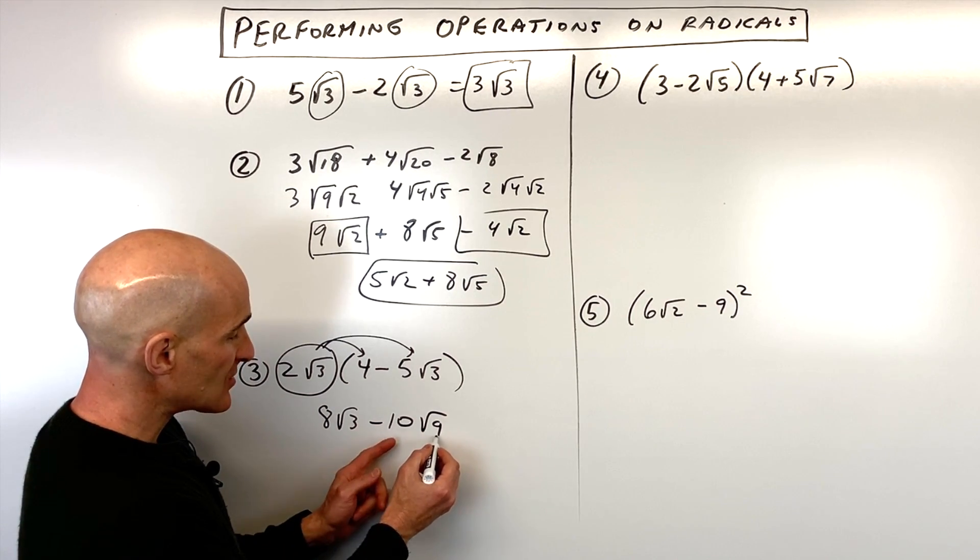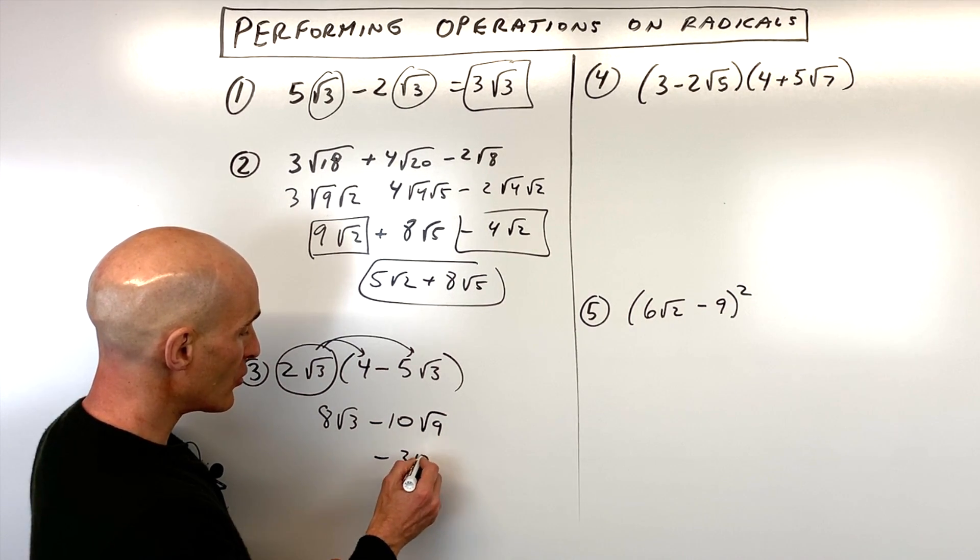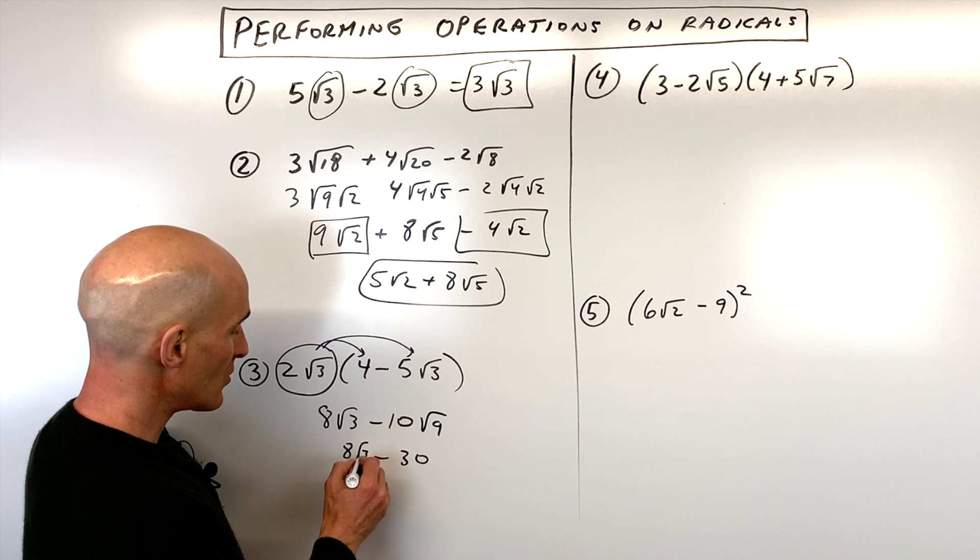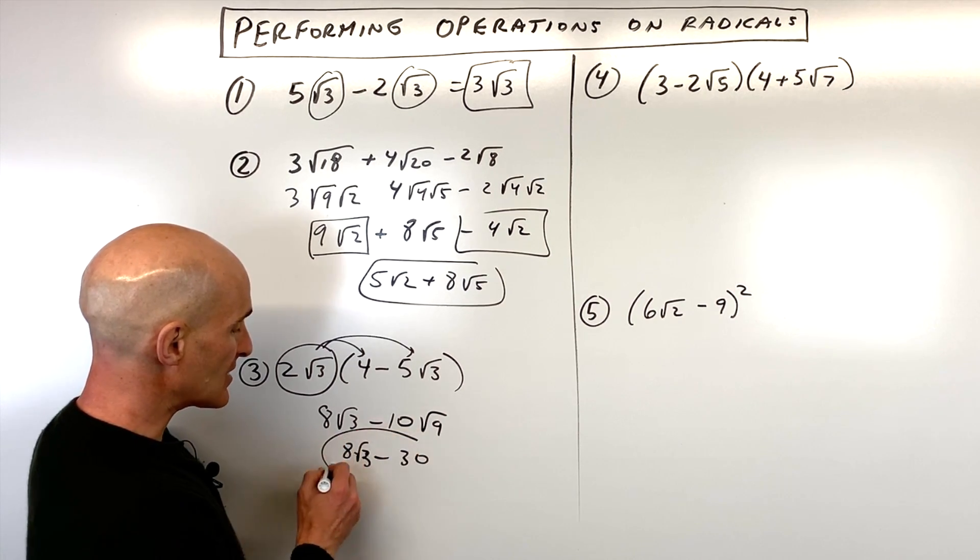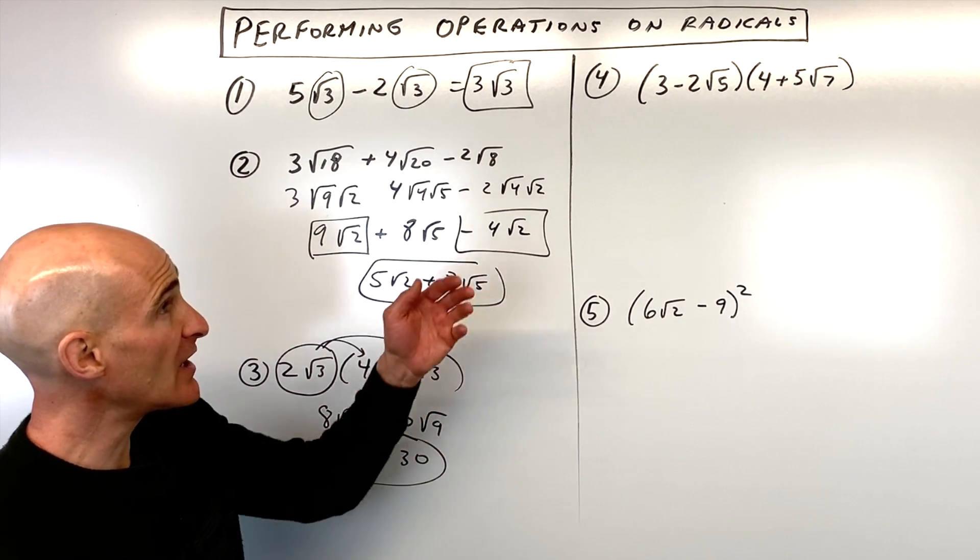So like terms, square root of nine is three times 10 is 30. So we just get eight square root of three minus 30 and you've got it. Okay, number four,